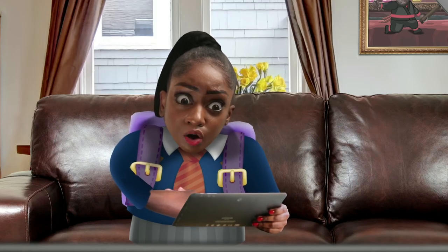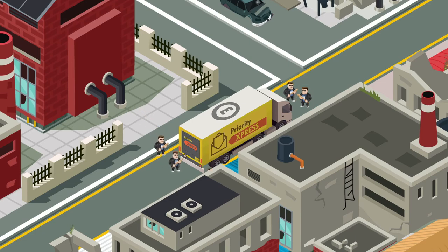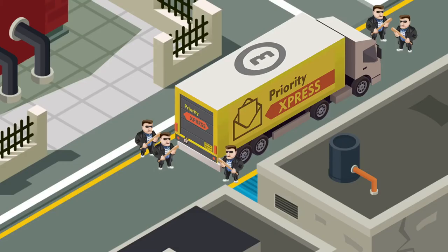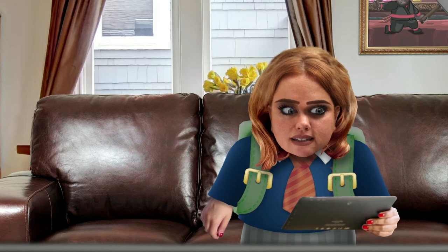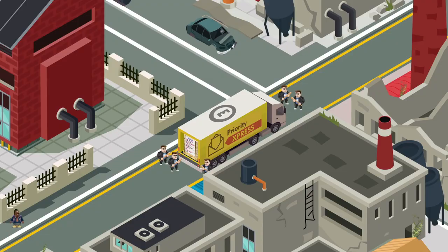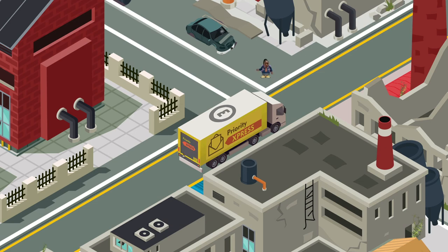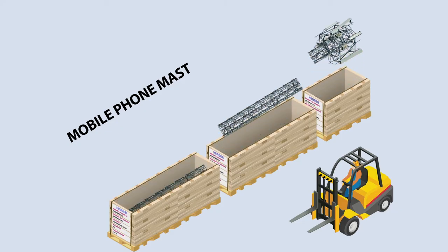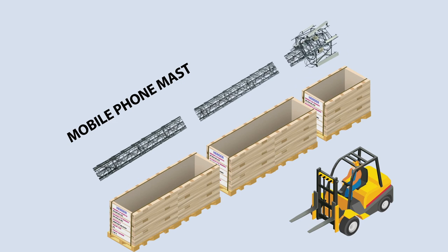What? Thieves, robbers, highwaymen — what is this, the 1800s? The highwaymen have gained access to the package, but cannot work out what it is. Wait here while I sort this out. Package number one has arrived at its destination. Even if the thieves managed to open the packet, it would be useless to them. You need all three packets to reconstruct and make any use of it.